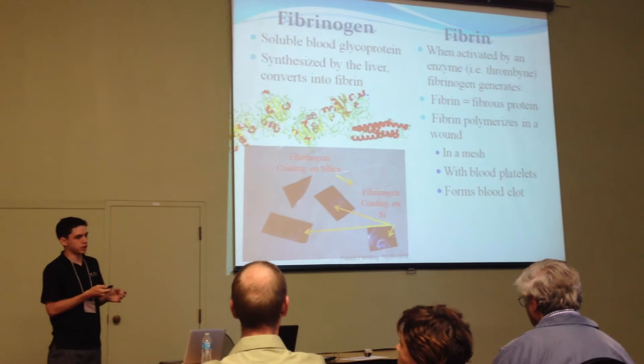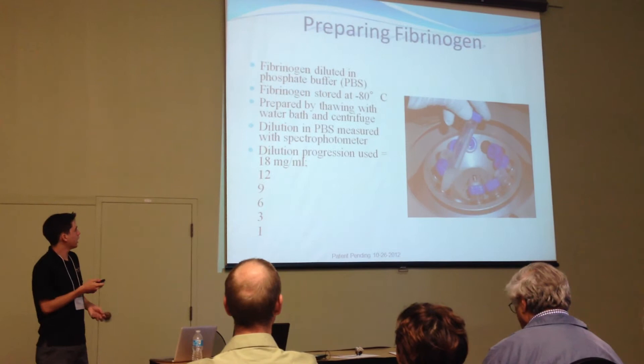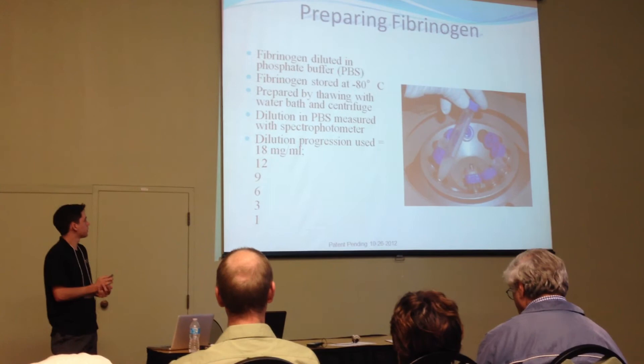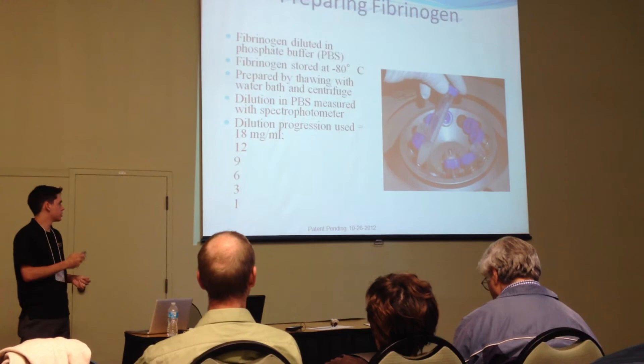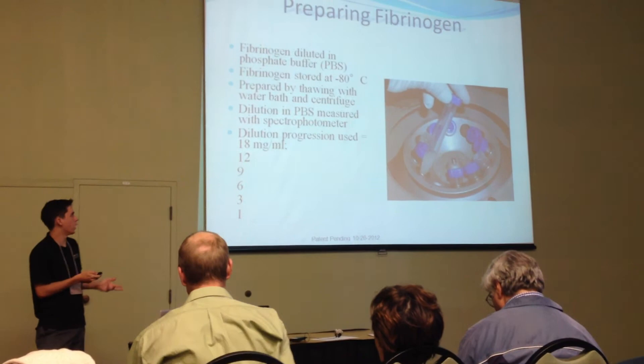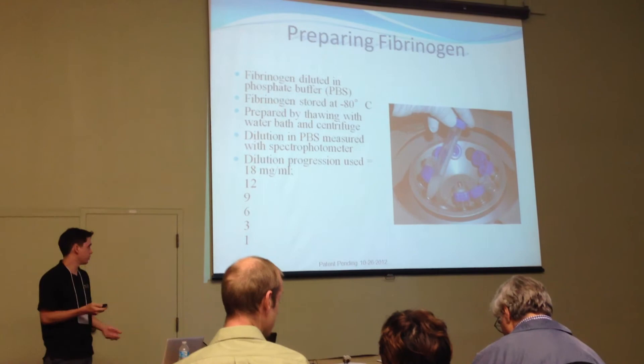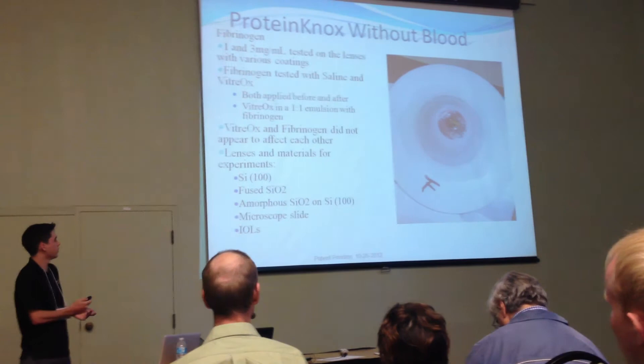The fibrinogen was prepared using a phosphate buffer. It needs to be stored at about -80 to -83 degrees Celsius, thawed with a water bath and centrifuge. We used six different dilutions of the fibrinogen — 18, 12, 9, 6, 3, and 1 — to test a wide variety of what would work best with our Vitriox applications. For our actual applications, we used the 1 and 3 concentrations tested directly on the lenses.